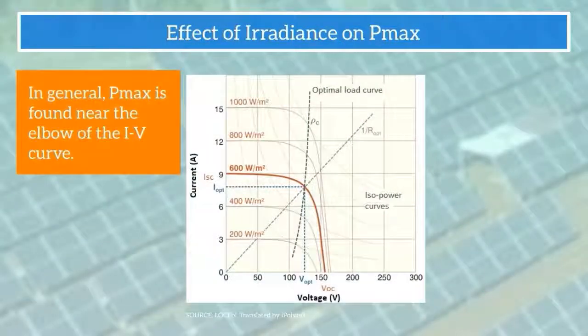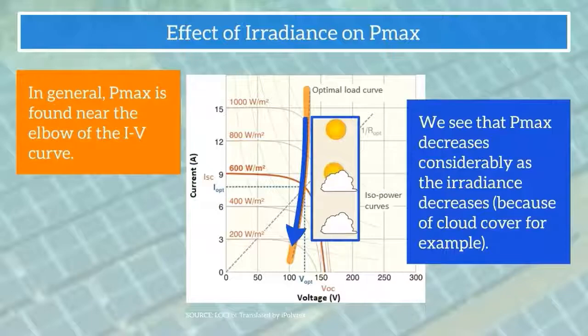In general, Pmax is found near the elbow of the IV curve. We see that Pmax decreases considerably as the irradiance decreases because of cloud cover, for example.